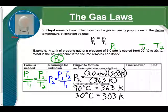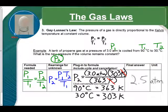P2 equals 3.0 atmospheres times 303 Kelvin divided by 363 Kelvin. So, we can cancel out the Kelvins, and we know our final answer is going to be in atmospheres. And when we do the math, we get 2.5 atmospheres. All right. That's it for today's lesson, and we'll see you next time.